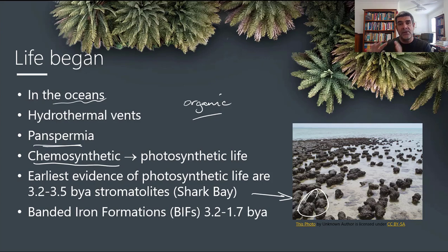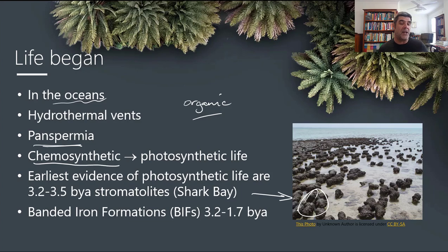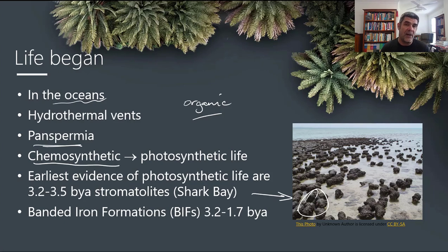We use organisms from the present to help build clues about what might have been happening in the past when we extract information from the rocks in the form of fossils. The first evidence of these sorts of structures is over 3 billion years old. Very ancient rocks contain evidence of stromatolite formation, which means that this type of life — now linked to a particular type of bacteria called cyanobacteria — must have been building these structures billions of years ago.